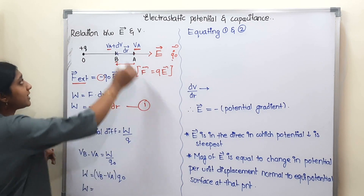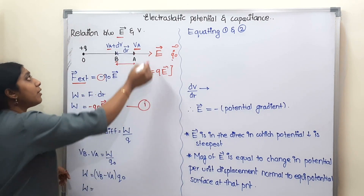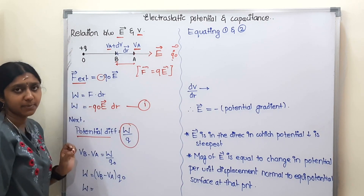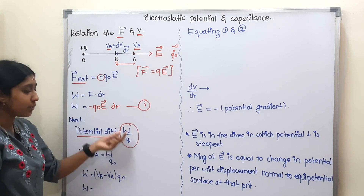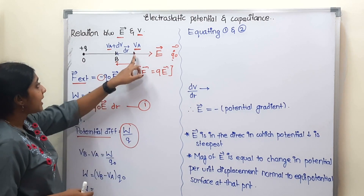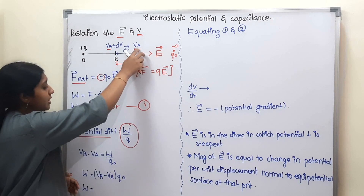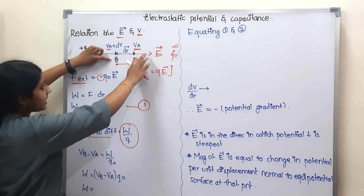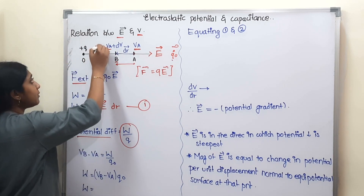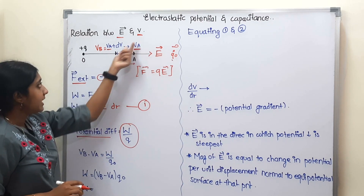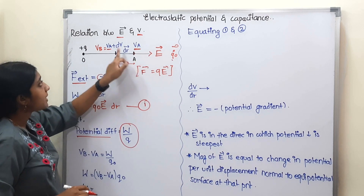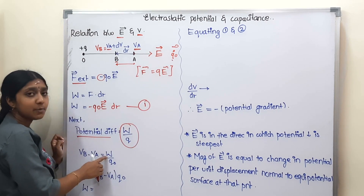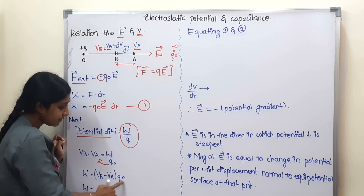From the first chapter, potential difference equals work done per unit charge: V = W/q. The potential difference from A to B: point B has potential Vb, which equals Va plus dV. So Vb minus Va equals W divided by q₀.